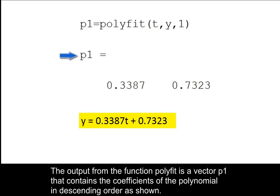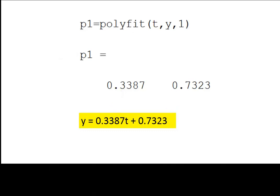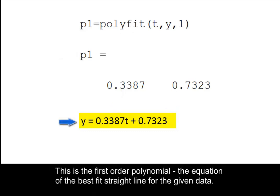The output from the function polyfit is a vector p1 that contains the coefficients of the polynomial in descending order as shown. This is the first order polynomial — the equation of the best fit straight line for the given data.